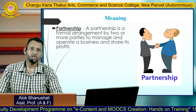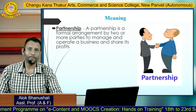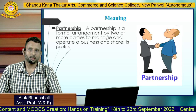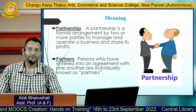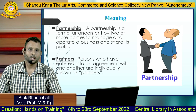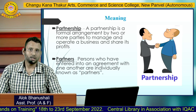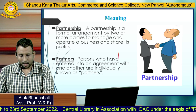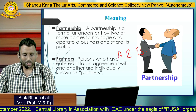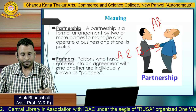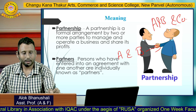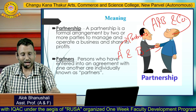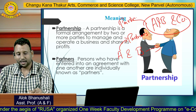Partnership is a formal arrangement by two or more parties to manage and operate a business and share its profits. When two partners come together and form a firm, it is known as a partnership firm. Individually they are known as partners, and collectively they are known as the partnership firm. For example, A and B come together to form AB and Company — A will be known as a partner and AB and Company will be known as the partnership.